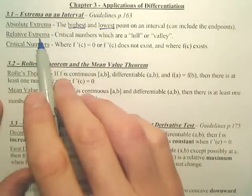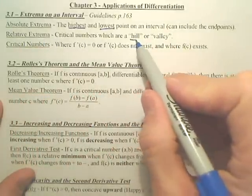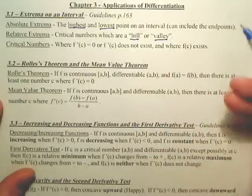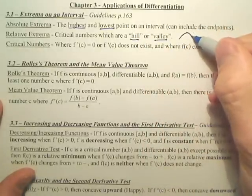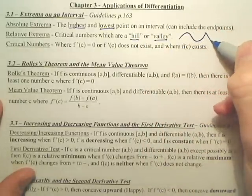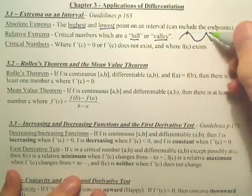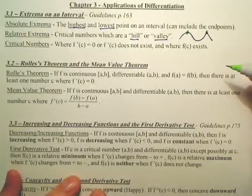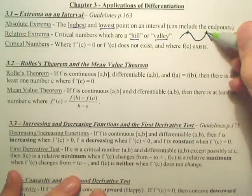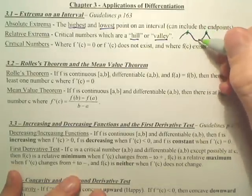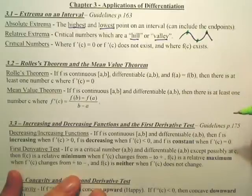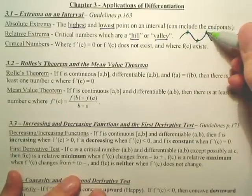A relative extrema are the hills and valleys. For instance, if you have a graph like this, these are hills. Those are relative maxes. These are valleys. They're relative mins. So relative min, relative maxes.